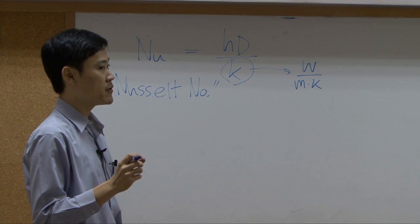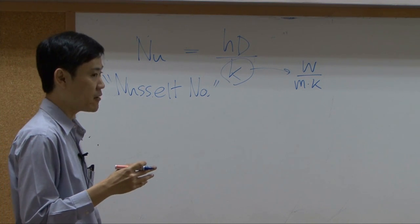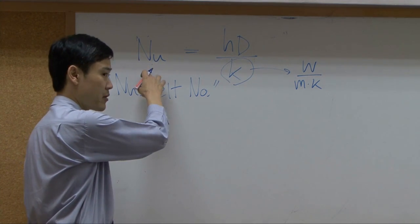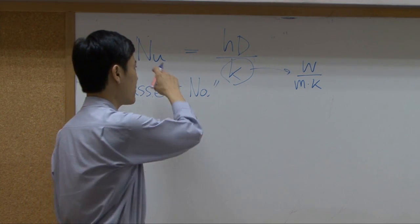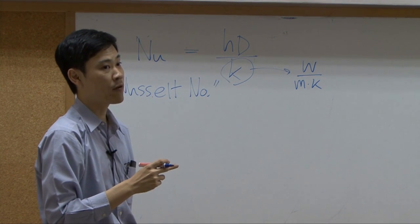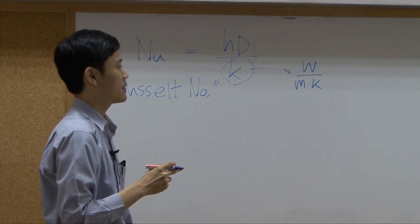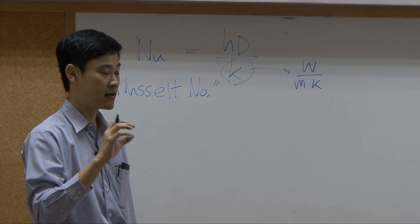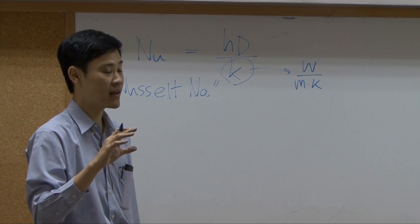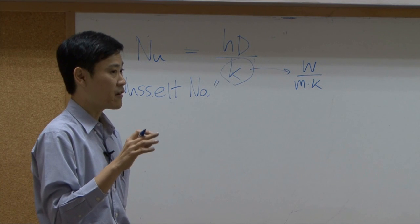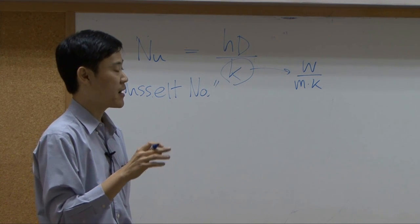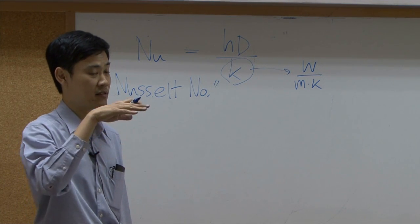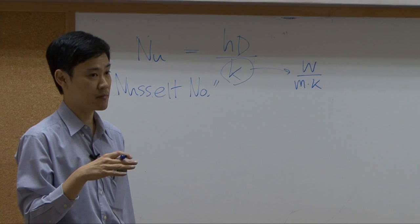So normally when you search the handbook, you find equation representing Nusselt number. And you should know that Nusselt number would lead you to heat transfer coefficient. Nusselt number will be represented based on different scenarios, like flowing in circular pipe, flowing in rectangular ducts, and so on. The list of Nusselt number formulas are given in your textbook as well. If you look into chapter 14, there will be a table listing different kinds of Nusselt numbers.